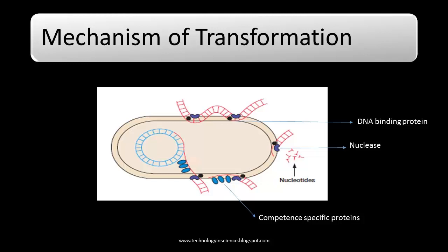DNA uptake requires energy expenditure. One strand is hydrolyzed by an envelope-associated exonuclease during uptake. The other strand associates with small proteins and moves through the plasma membrane. The single-stranded fragment can then align with a homologous region of the genome and be integrated into the bacterial chromosome.